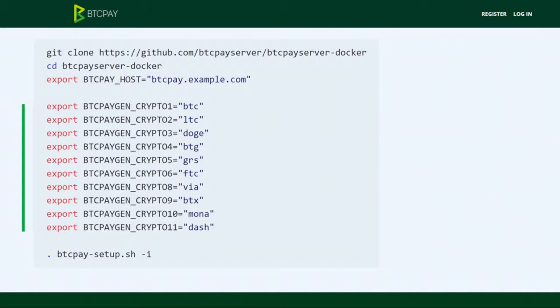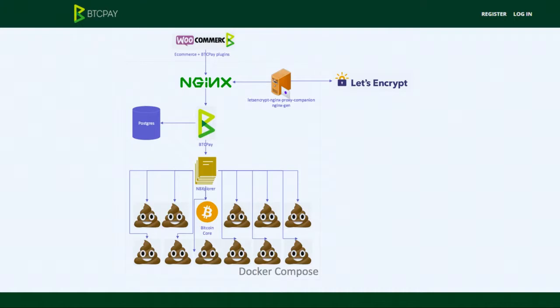If you want to add several altcoins — Litecoin, Dogecoin, Bitcoin Gold, whatever shitcoin you want — it's just one line. You set it and run the setup and it works. The reason there are so many shitcoin supporters is basically that I don't have to do anything myself — shitcoiners implement shitcoin support by themselves, so there's no real work on my side.